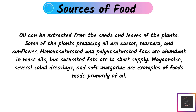Oils: Oil can be extracted from seeds and leaves of plants. Some of the plants producing oil are castor, mustard, and sunflower. Monounsaturated and polyunsaturated fats are abundant in most oils, while saturated fats are in short supply. Mayonnaise, salad dressings, and soft margarine are examples of foods primarily made from oil.